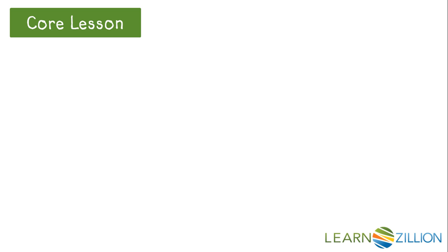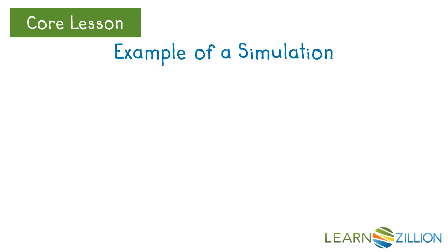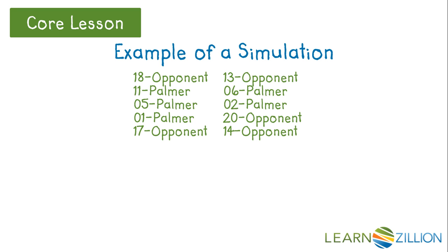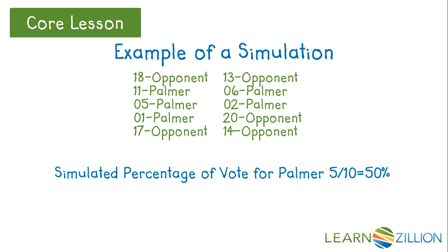We can assign the vote then to Palmer or his opponent. In this simulation, there were 5 votes for Palmer and 5 votes for his opponent. In this case, the winner could not be determined because it was a dead tie. Another simulation might produce different results. At this point, Palmer is in a race that is too close to call.